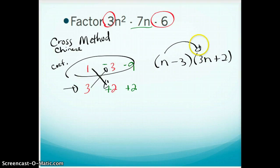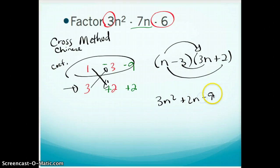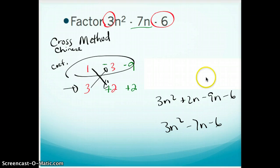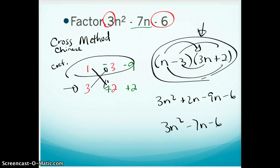If I double check to see if this works, we're going to say 3n squared, plus 2n, minus 9n, minus 6. And that simplifies to 3n squared, minus 7n, minus 6. So I'm done, and that is my, those are my two binomial factors. So that's called cross method. I personally like cross method because it's just a little bit easier for writing, so I'm going to use it a few more times.